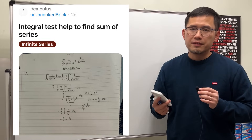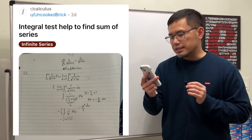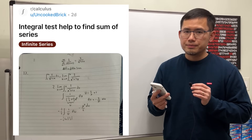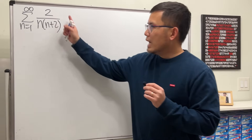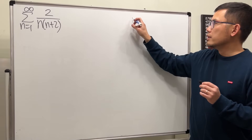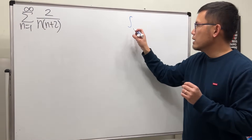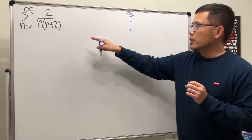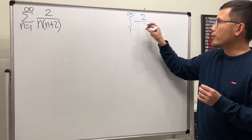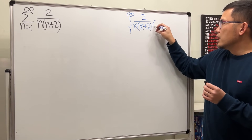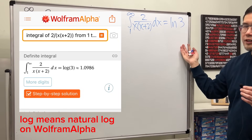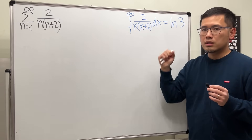The integral test helps find the sum of an infinite series. We have the series as n goes from 1 to infinity of 2 over n times n plus 2. If we take a look at its corresponding improper integral — that would be the integral going from 1 to infinity — we change all the n's to x's, so we get 2 over x times x plus 2. If you work this out, you end up with ln3, which is a finite number, so that means this integral converges.